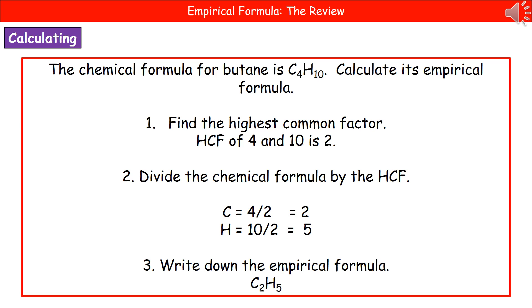What we then do is divide the actual numbers in the formula by the highest common factor. So for carbon, it's 4, so 4 divided by 2 gives us 2, and hydrogen, 10 divided by 2 gives us 5. And then those are the numbers we're going to write after our particular elements. So when we're writing the empirical formula, it would be C2H5.